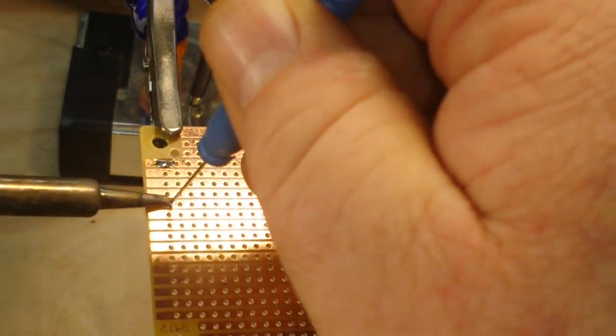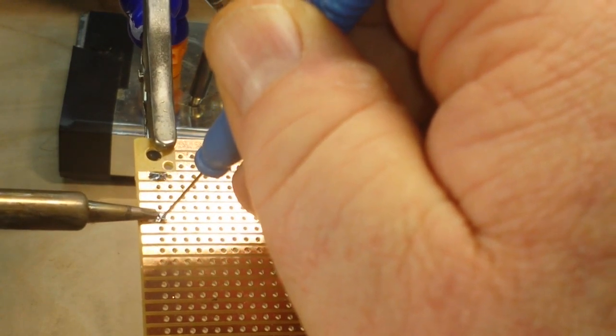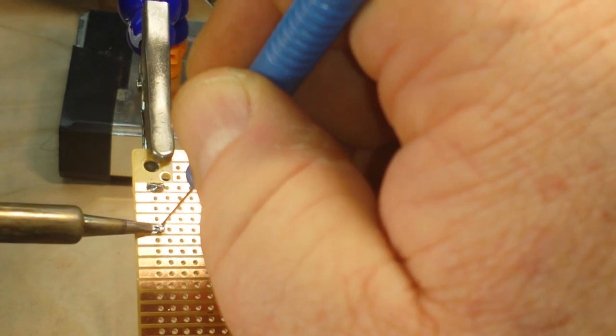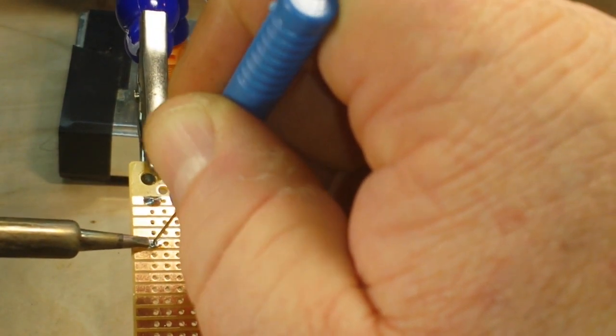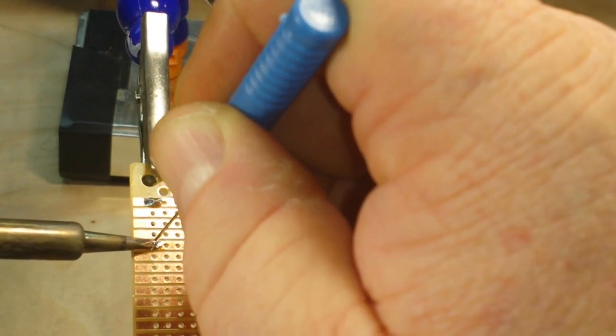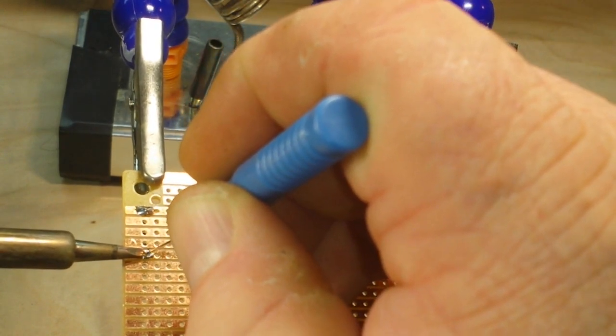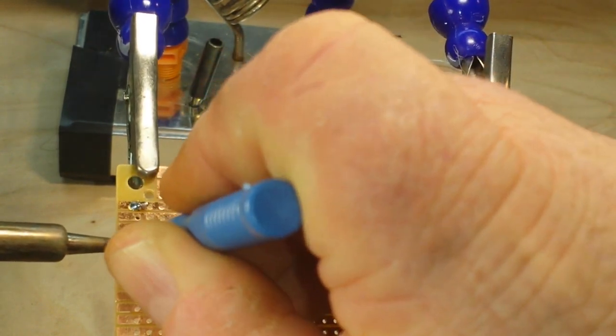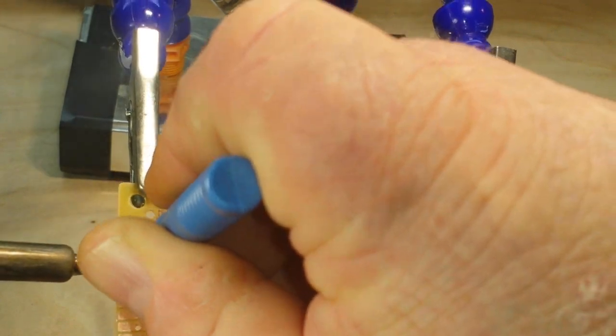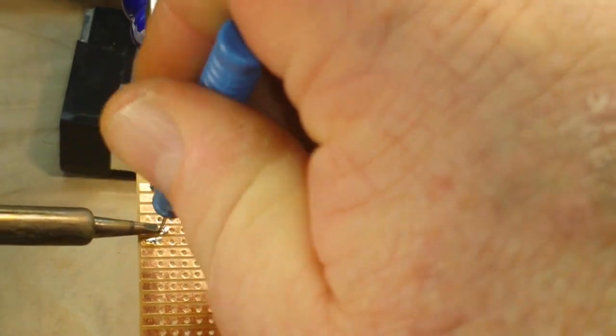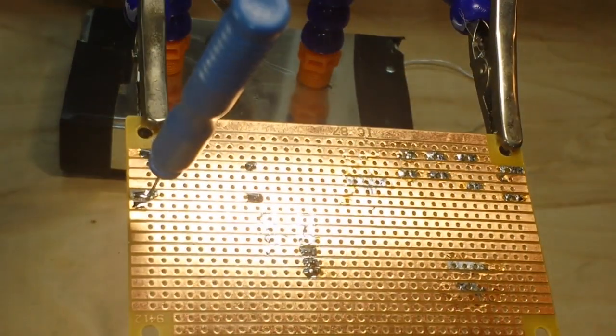So we bring out our regular soldering iron and we heat up the joint. I can't find the hole... there we go. Once we do that, we put the hollow needle through the hole just like that.